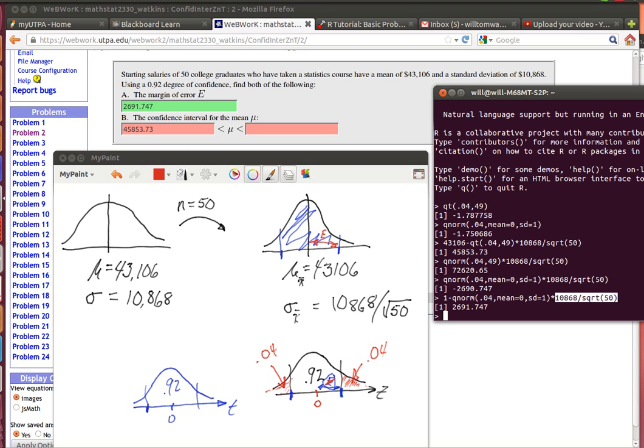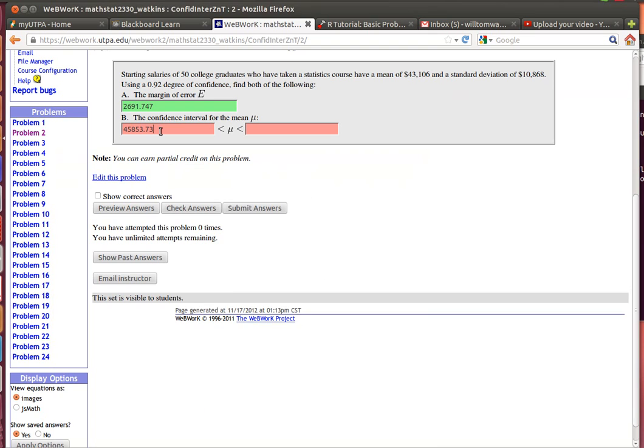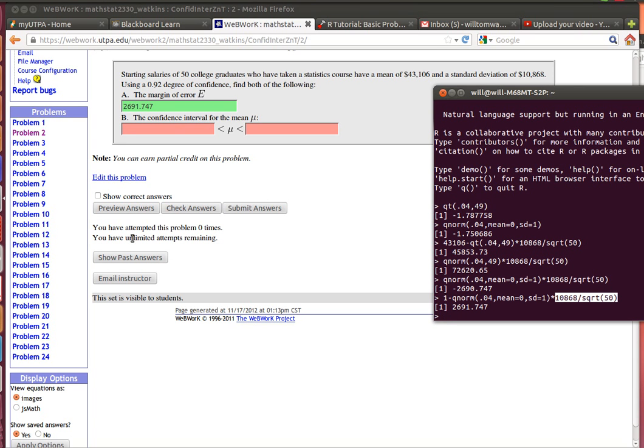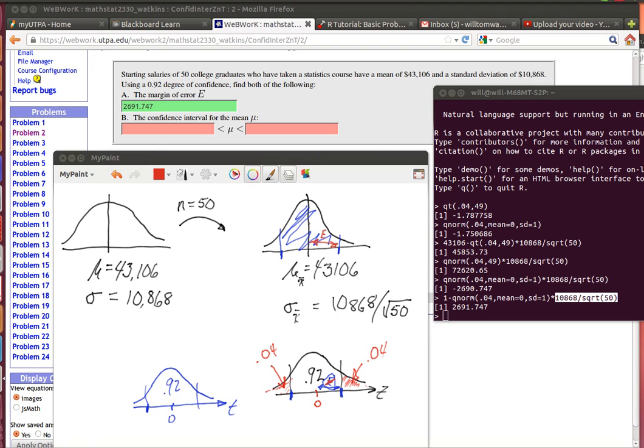Now it's easy to find the others because I'll just take 43,106 and add E to it. Here you go.